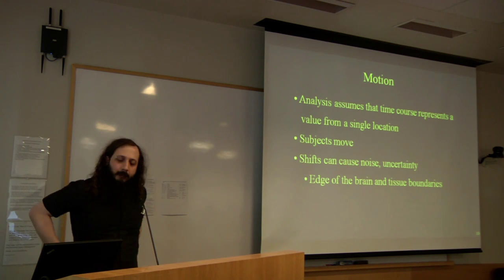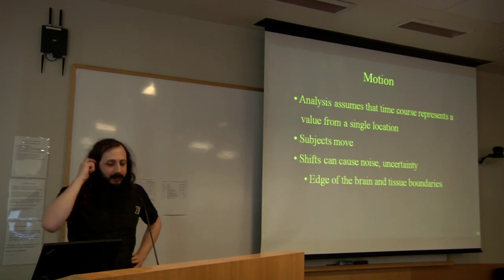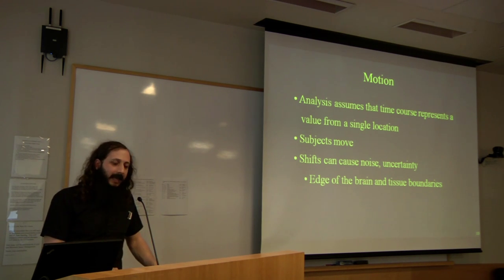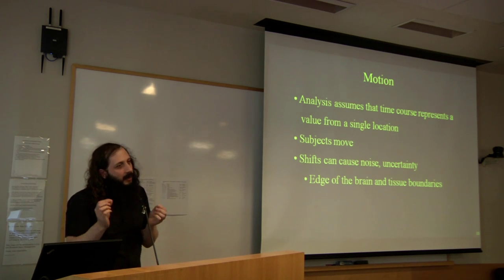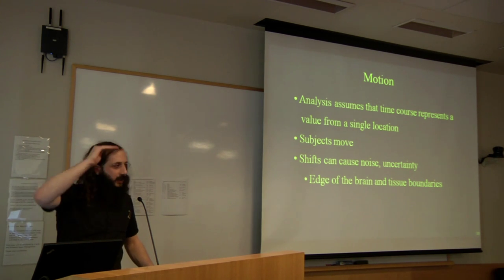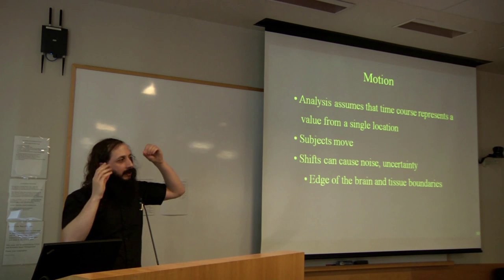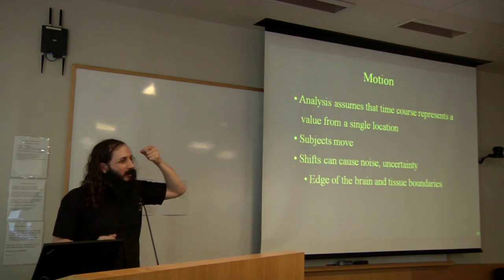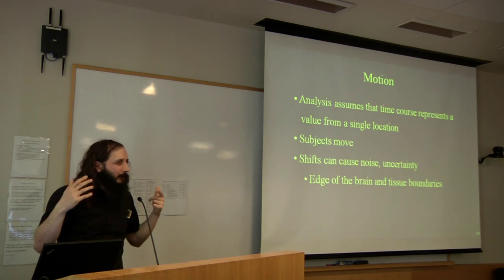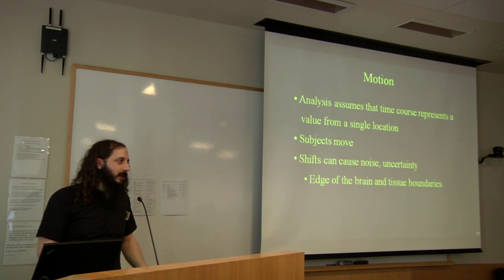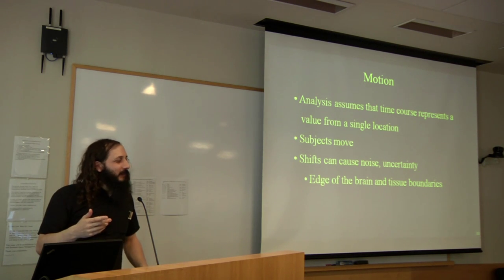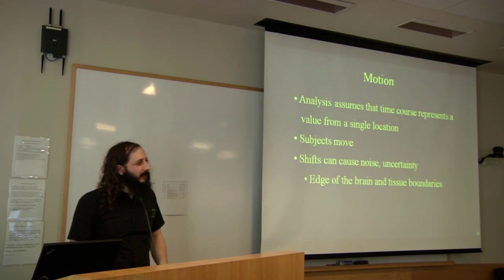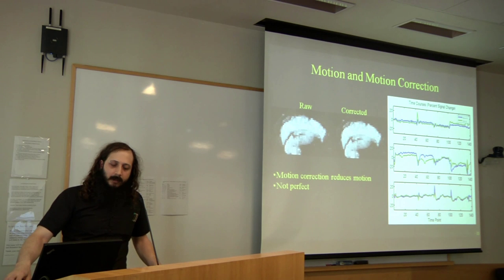Motion correction helps with the assumption that our analysis requires — that the time course represents a value from a single voxel over time. Subjects inevitably move; even a well-trained subject will move a little during a scan. Motion not only causes the voxel to be sampled from different anatomical locations, but can also cause changes in intensity. For example, a voxel at the gray-white boundary could show intensity changes just due to motion. So motion correction can introduce various fluctuations in the signals, and these need to be taken into account.